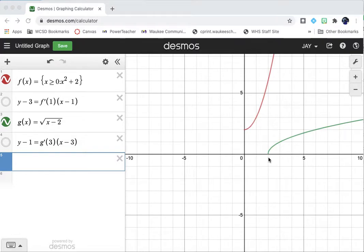And I've also got its inverse function here, root of x minus 2. That's the green function here. And you'll see that on the left side I've got the tangent lines already queued up at specific points.